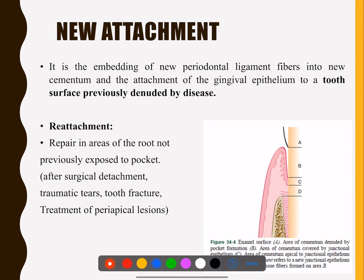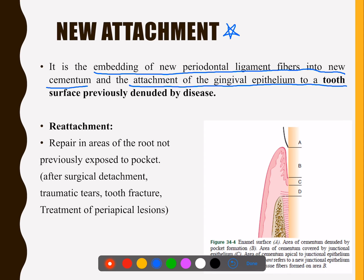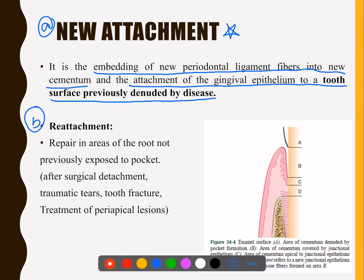Before that, let's look at what is 'new attachment' — a very important term. If it is the embedding of new periodontal ligament fibers into new cementum and the attachment of gingival epithelium to a tooth surface previously denuded by disease, it is called new attachment. The most important phrase here is 'tooth surface previously denuded by disease' — meaning the patient already had disease and you achieved new attachment.